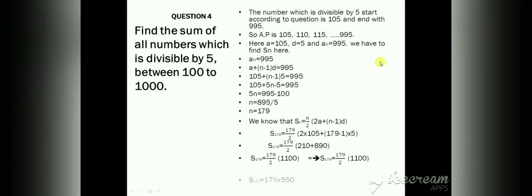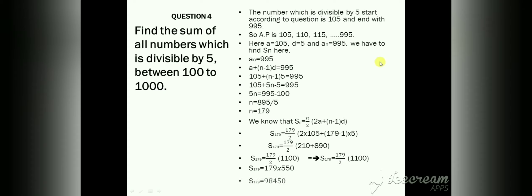1100 divided by 2 gives 550. Multiplying 550 by 179 gives 98,450. This is the final answer. After simplifying, the sum of all numbers divisible by five from 100 to 1000 is 98,450.